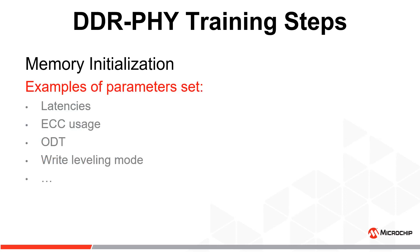Memory initialization provisions the DRAM mode register set, or MRS registers. Examples of parameters set during this process are latencies, ECC usage, termination values, training modes, and other parameters.